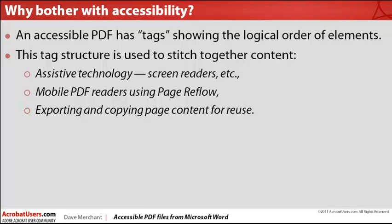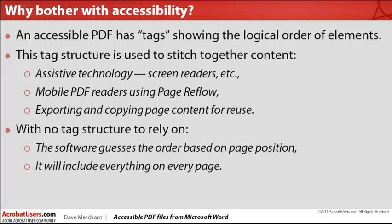When you're copying content or exporting part or all of a PDF file into a different format, the same rules apply. You'll often find that if you're trying to select text on a non-tagged PDF file, you can get some very strange things happening, because there's no inherent order in the content of a PDF as there is in a web page. Without a tag system, the software has to guess the order, and it uses page position — left to right, top to bottom.